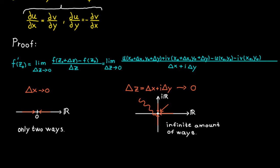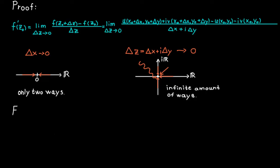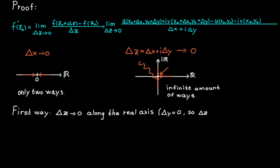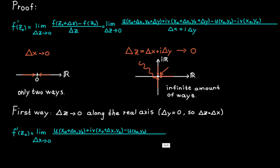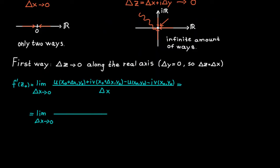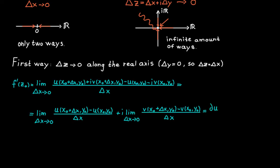The first way to approach zero is to go along the real axis. If we go along the real axis then delta y is equal to zero, so the expression for delta c simply becomes delta x. The big expression for the derivative then simplifies, and breaking it into two separate terms — one including all the u functions and one including all the v functions — we can see that the first term is simply the partial derivative of u with respect to x, and the second term is i times the partial derivative of v with respect to x.